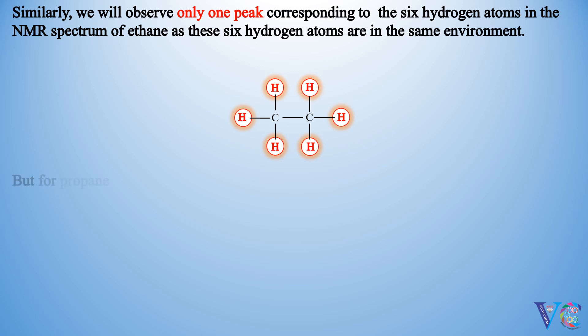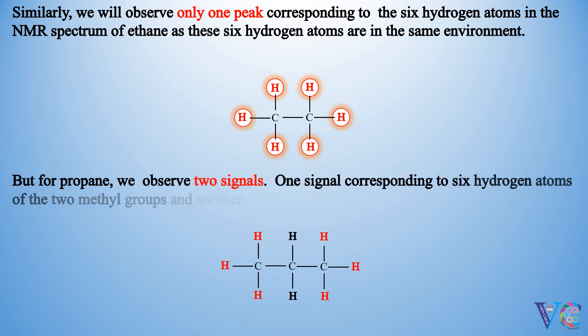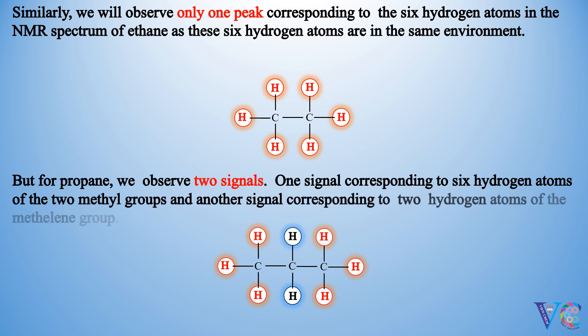But for propane, we observe two signals. One signal corresponding to 6 hydrogen atoms of the 2 methyl groups, and another signal corresponding to 2 hydrogen atoms of the methylene group.